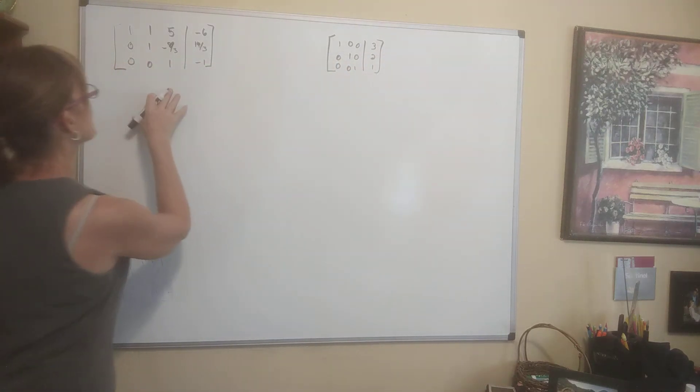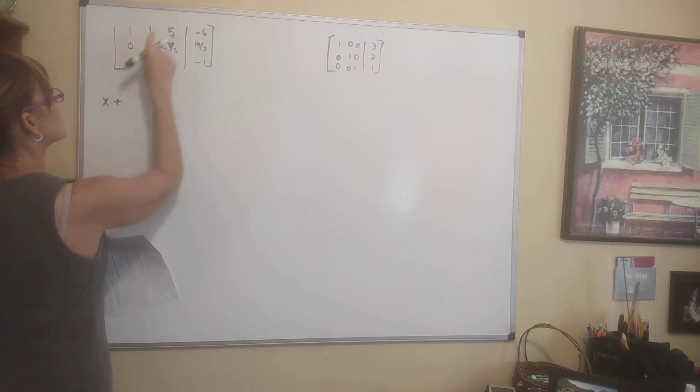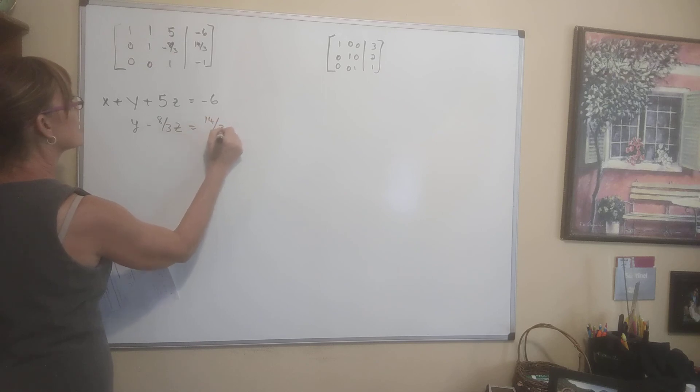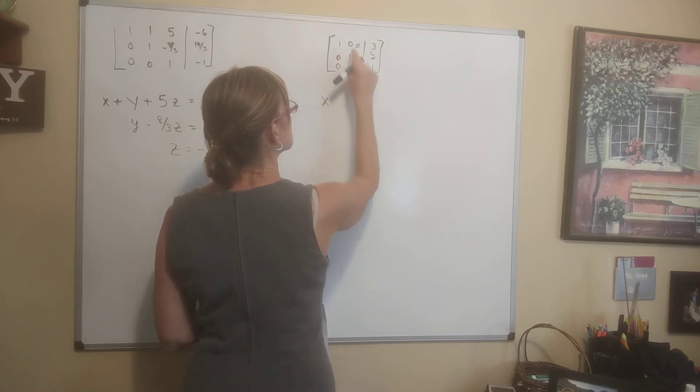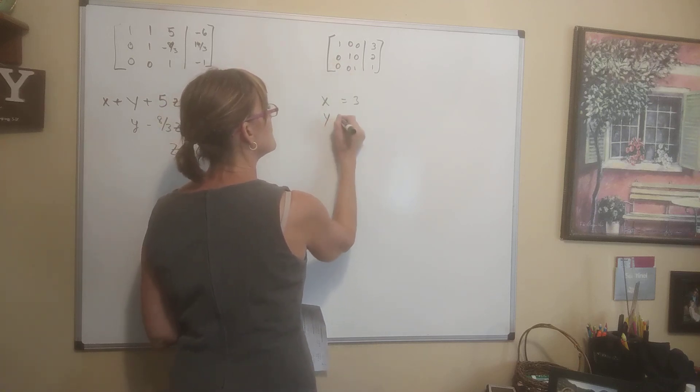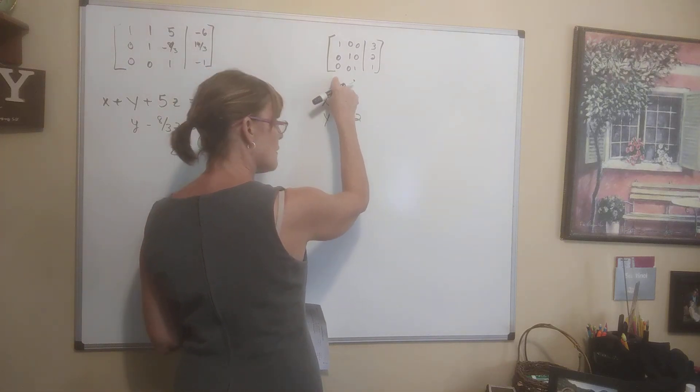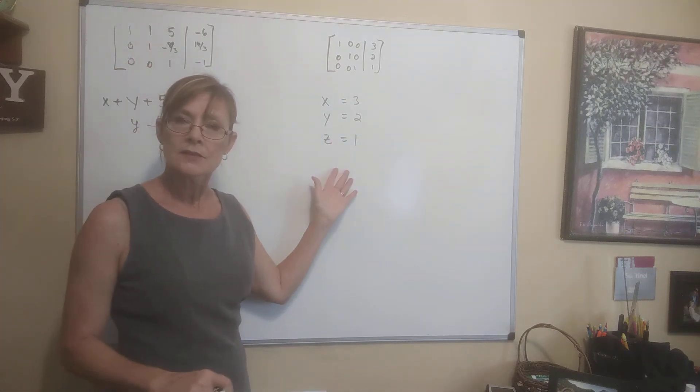Alright, so the equation that would go with this would be 1X plus 1Y plus 5Z is negative 6. And right here, this would be 0X plus 1Y minus 8 thirds Z is 14 over 3. Right here, 0X plus 0Y plus 1Z is equal to negative 1. This is the equation that would go with this. Let's write the equation that would go with this: 1X plus 0Y plus 0Z is 3, 0X plus 1Y plus 0Z is 2, 0X plus 0Y plus 1Z is 1. Wow, that's handy. That solved our whole system of equations.